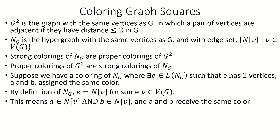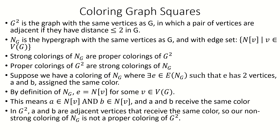The fact that A and B are in the closed neighborhood of a vertex means they're a distance at most two. So in G squared, A and B are adjacent but assigned the same color, meaning our coloring is not a proper coloring of G squared.